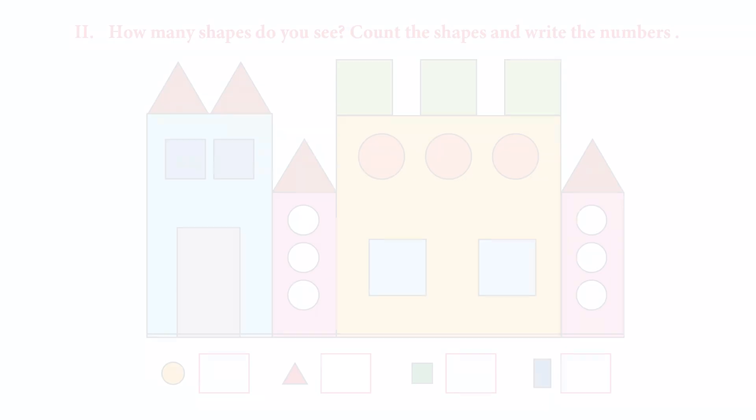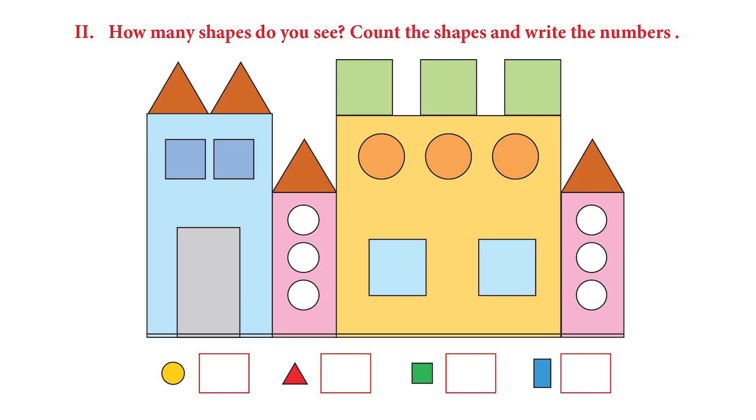Now we're going to try another thing. Here we're going to look at an image, and this image is filled with different shapes. You have to count and see how many circles there are, how many triangles, how many squares and rectangles are inside this picture. Shall we try? See this is the image. Can you see there are a lot of shapes in different colors and sizes? Let's look at circles first.